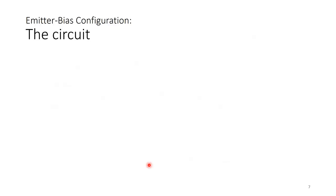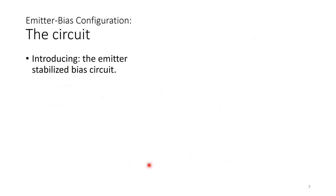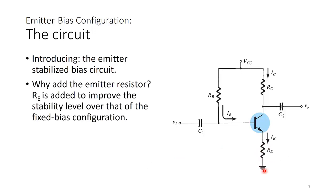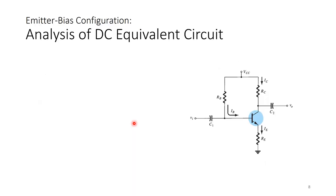We want a circuit that is more stable with temperature changes or beta changes. Introducing the emitter stabilized bias circuit: we have an emitter resistor RE connected from the emitter terminal to ground. RE is added to improve the stability level over that of the fixed bias configuration.